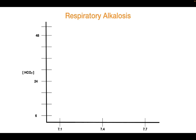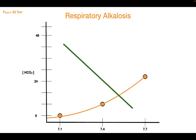What about a respiratory alkalosis? A respiratory alkalosis is when you have a decreased amount of CO2 inside the lungs. This would be analogous to a partial pressure of CO2 being equal to 20 Torr, so the curve for that is this one. In order to find the pH of the solution, you draw your non-bicarbonate buffer line, and at the intersection of the two is the pH. The pH increased by a little bit as well because of this respiratory alkalosis.